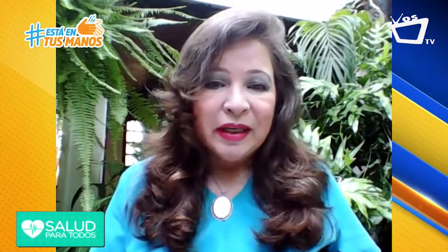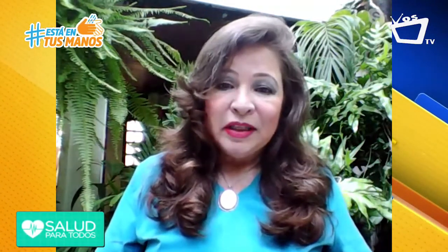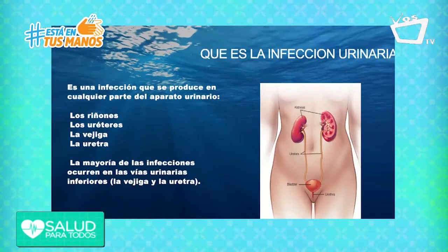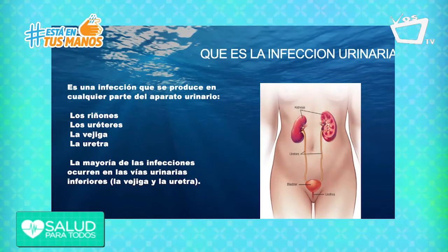Es una infección muy común, de cualquiera de las partes del aparato urinario. Te puede dar a nivel de los riñones, que se llama pielonefritis; a nivel de los uréteres, que es donde drenan los riñones; a nivel de la vejiga, que es una cistitis; y a nivel de la uretra, que es una uretritis. Muchas veces pasan asintomáticas y pueden ser causantes de complicaciones en el riñón o en las mujeres a lo largo de su vida reproductiva y no reproductiva.